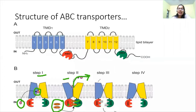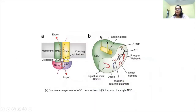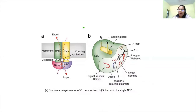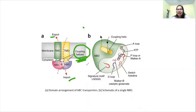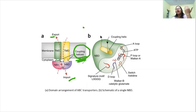Once the molecule has been transported, the transporter returns to its original state. Looking at a more complex structure: one transmembrane domain is for export, the second is for import — which explains why there are two transmembrane domains. The coupling helices ensure that whenever there is a conformational change, it is coupled with ATP binding to the NBD, which results in the molecule moving in to out or out to in.